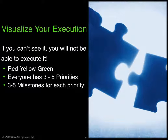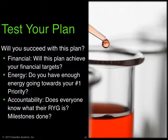This is what separates a great execution plan from a weak one. In weak ones, people celebrate as soon as they know what the priorities are, but they didn't take the time to really visualize what it takes to get done. In your planning session, don't be surprised if you need two to three hours to actually visualize your execution. If you can't see it, you will not be able to execute it. Everyone's got to have three to five priorities, and in every individual priority, make sure there are three to five key milestones.